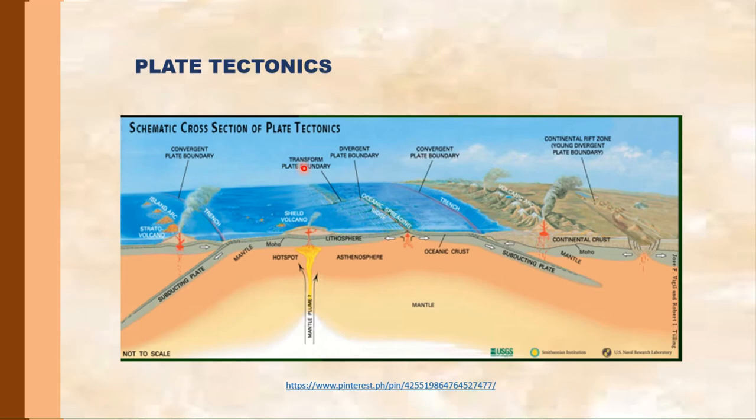Landforms are produced by the movement of plates. Convergent boundaries result in the formation of mountains, volcanoes, and trenches. While divergent boundaries result in the formation of rift valleys and mid-ocean ridges. While fault is formed by transform plate boundaries. And so with earthquakes.